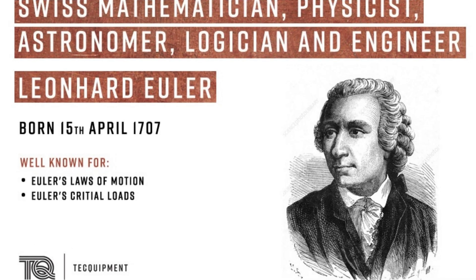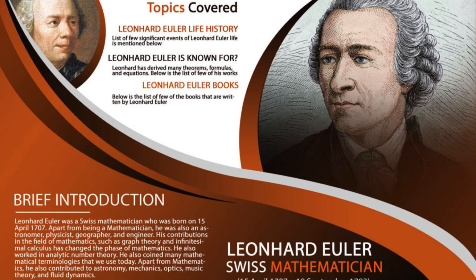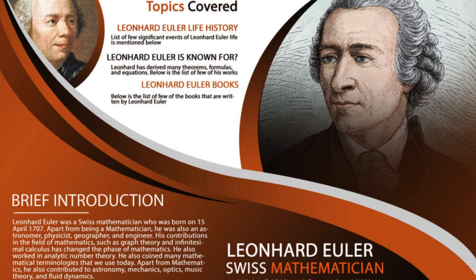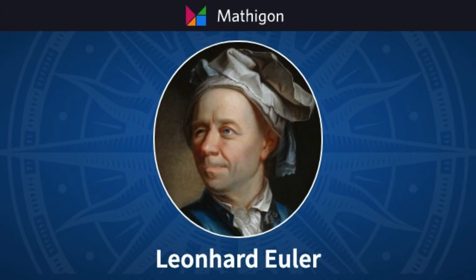By his early 20s, he was already publishing important papers and getting recognition across Europe. In 1727, Euler moved to the St. Petersburg Academy of Sciences in Russia, where he began a career that would make him one of the most productive mathematicians of all time.